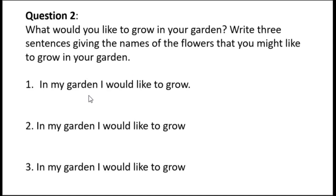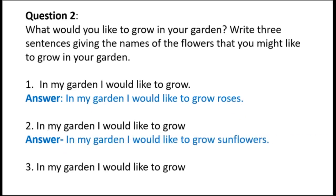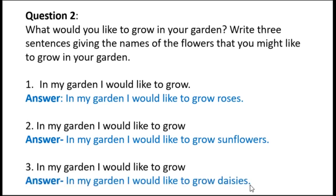First sentence: In my garden, I would like to grow roses. Next: In my garden, I would like to grow sunflowers. You can also write another flower of your choice. Next: In my garden, I would like to grow daisies.